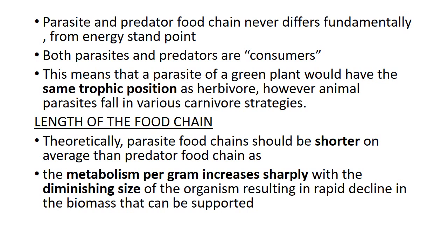Regarding the length of the food chain, theoretically parasite food chains should be shorter on average than predator food chains. The metabolism per gram increases sharply with diminishing size of the organism, resulting in a rapid decline in biomass.